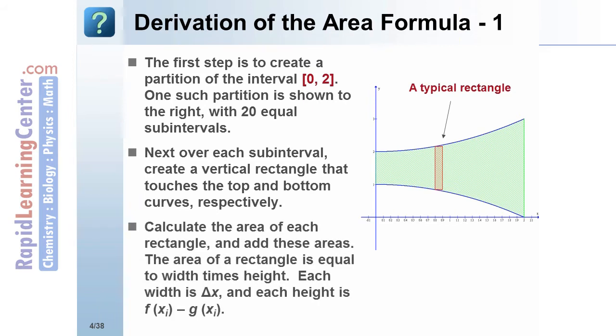Calculate the area of each rectangle and add these areas. The area of a rectangle is equal to the width times height. Each width is Δx and each height is f(x_i) - g(x_i).